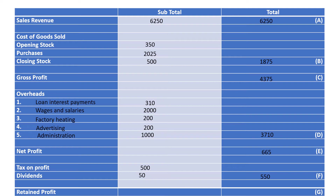Now the last thing we have is retained profit — this is the money the business keeps for future investment. So if I was British Airways I might use it to buy some new planes; if I was Tesco's I might build a new store. It's really important for a business to have retained profits so they can grow. So to calculate this, step 7, we take our net profit figure, take off our tax and our dividends, and that gives us £165 — and that is how to do a profit and loss statement.